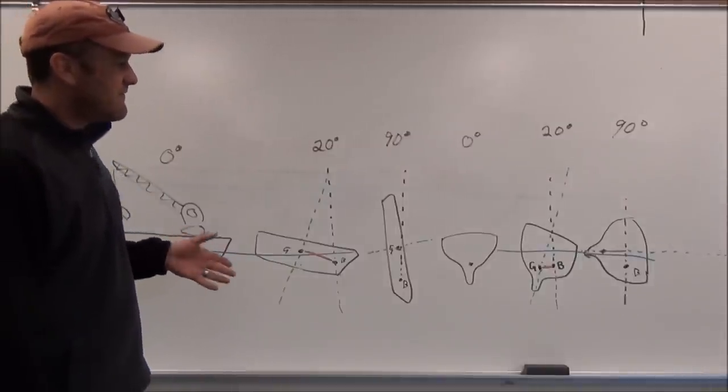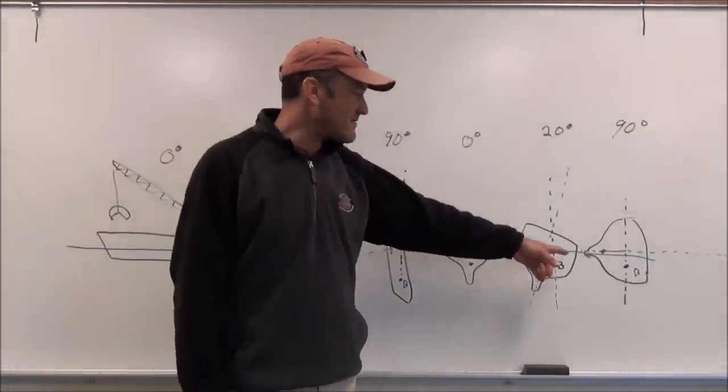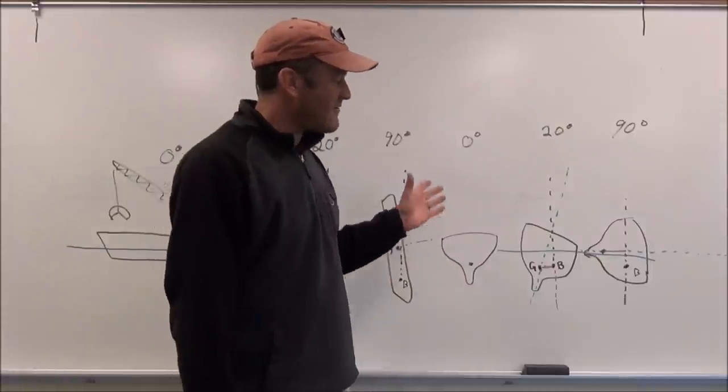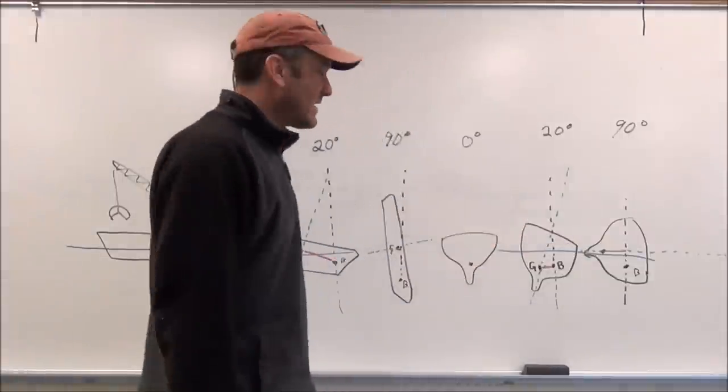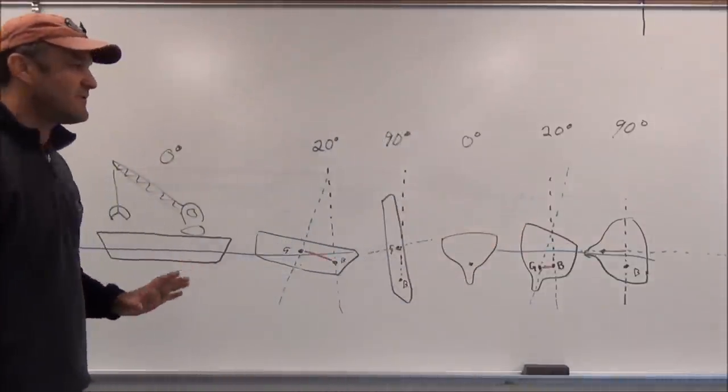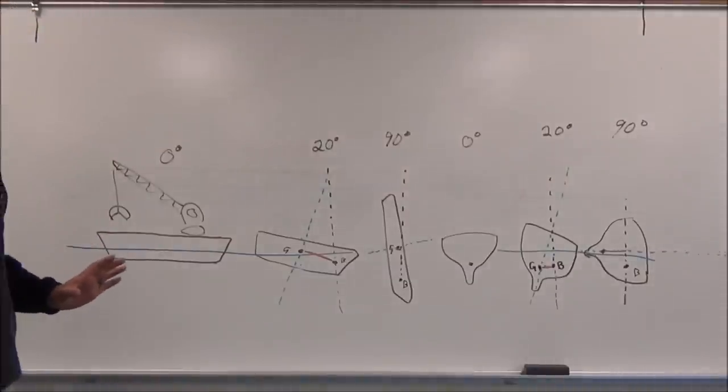However, for the high seas, you could have something like this. So if you had a big wave or a lot of wind that knocked the vessel over, she will come back. So that's the difference between initial and ultimate stability.